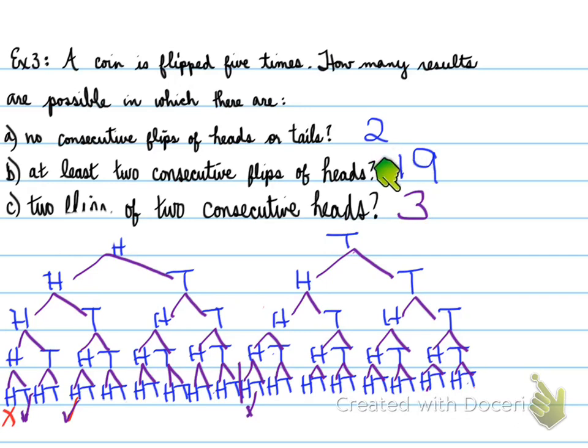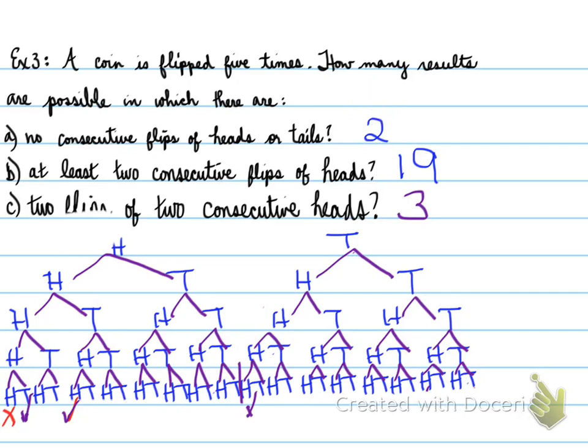So the results are: three possible cases of two flips of two consecutive heads, 19 for at least two consecutive flips of heads, and 2 for no consecutive flips of heads or tails. It's really difficult to read tree diagrams, so there must be a better way. We're going to see in this chapter a better way to calculate all these values without having to draw tree diagrams. That's the end of the lesson — have yourself a numerical day.